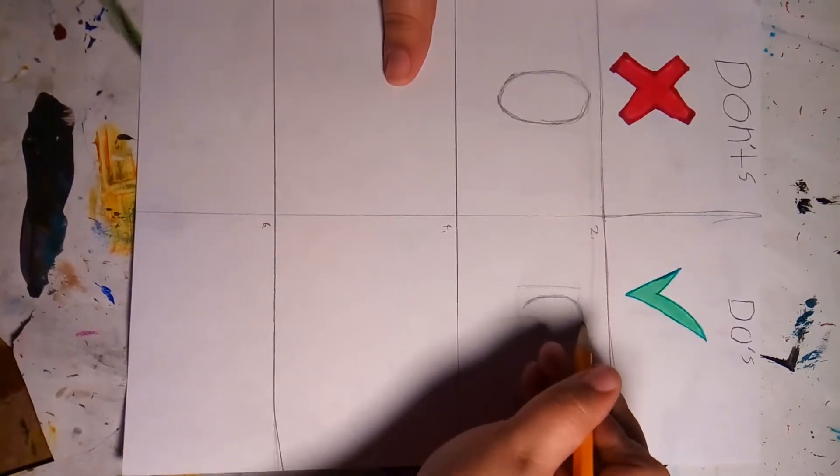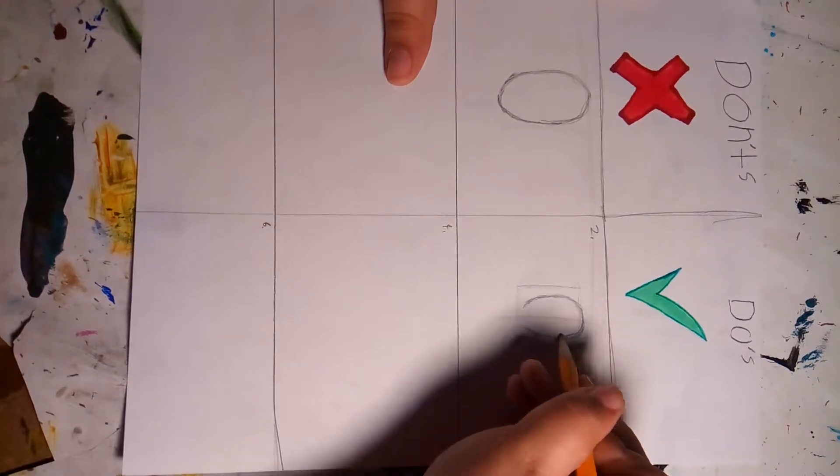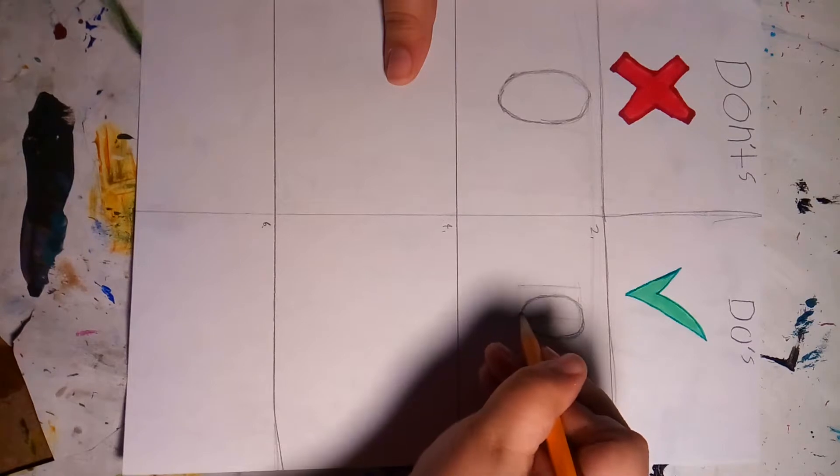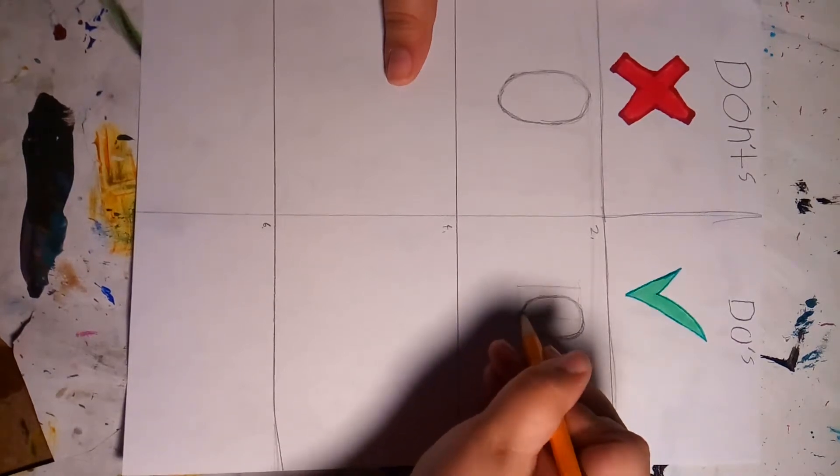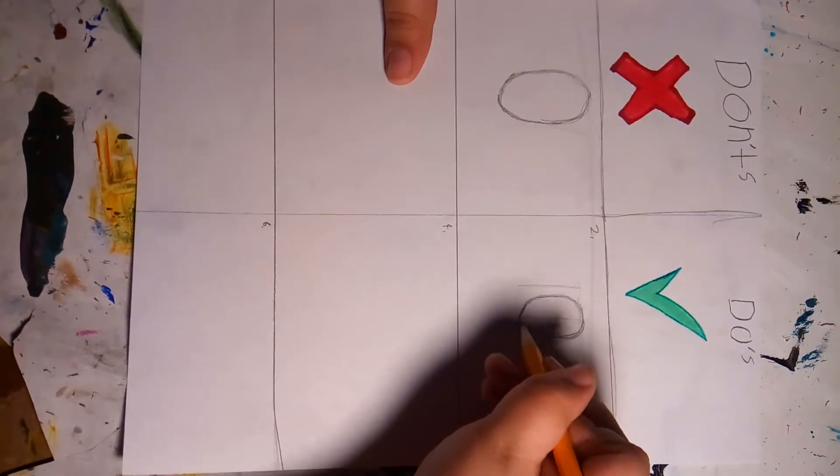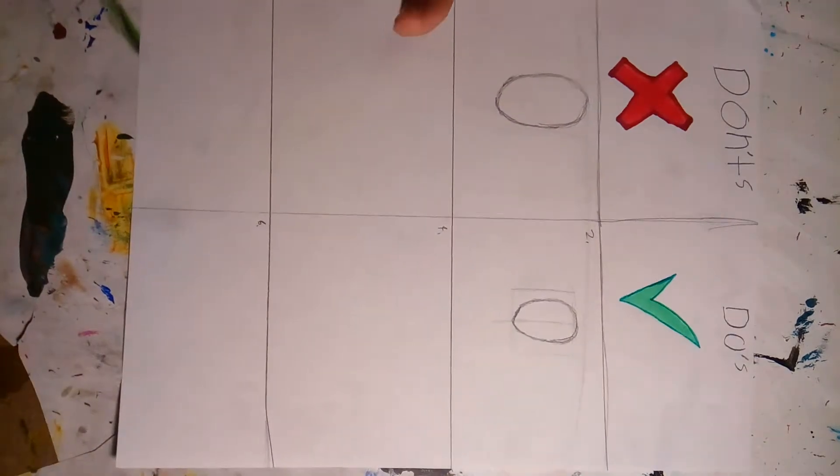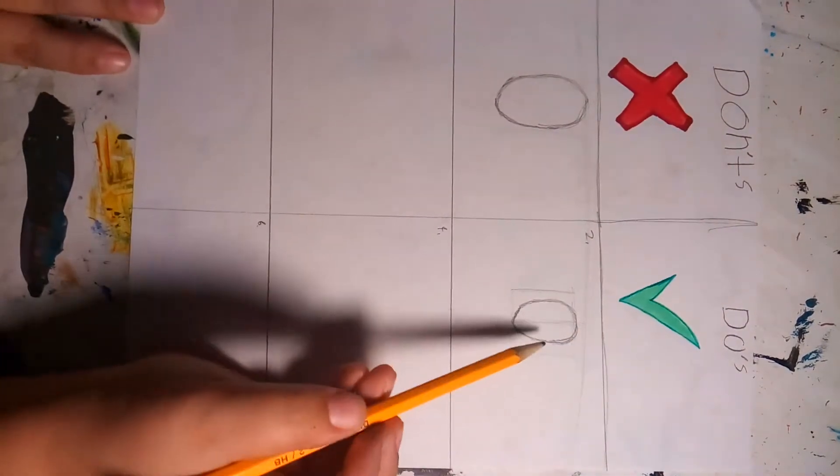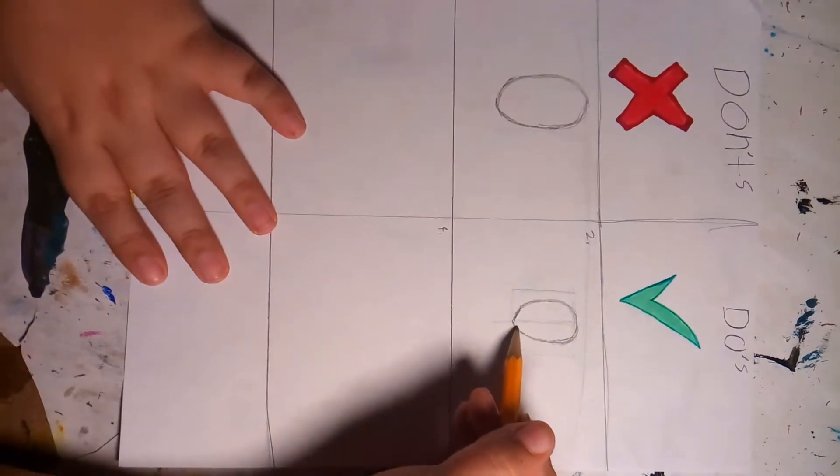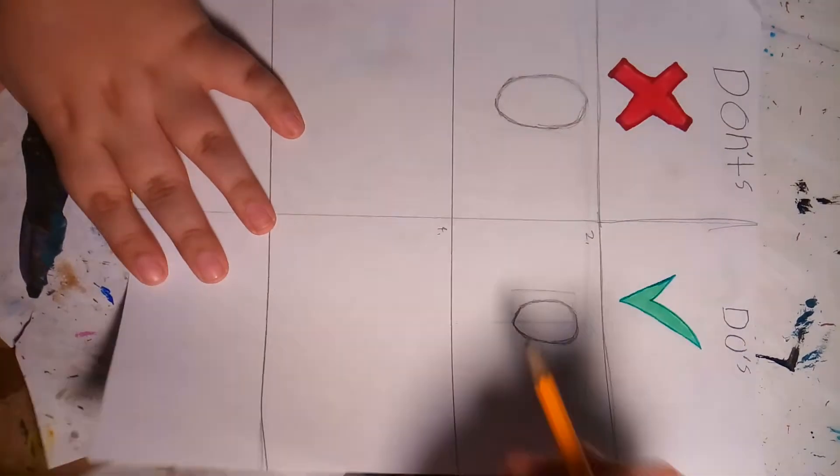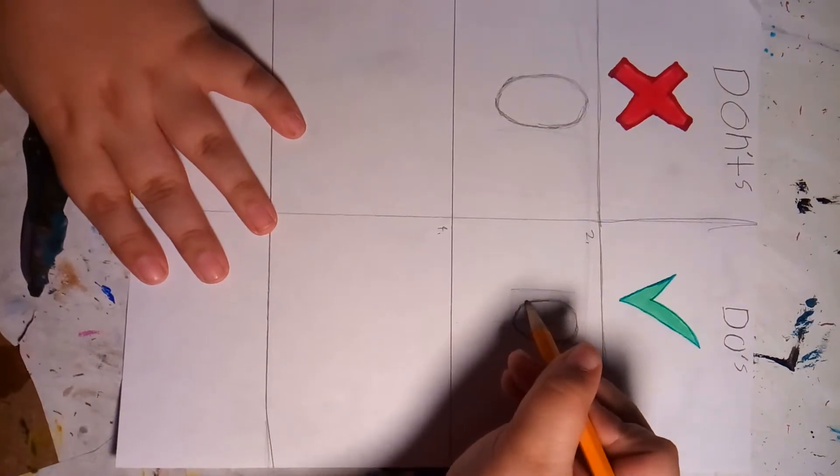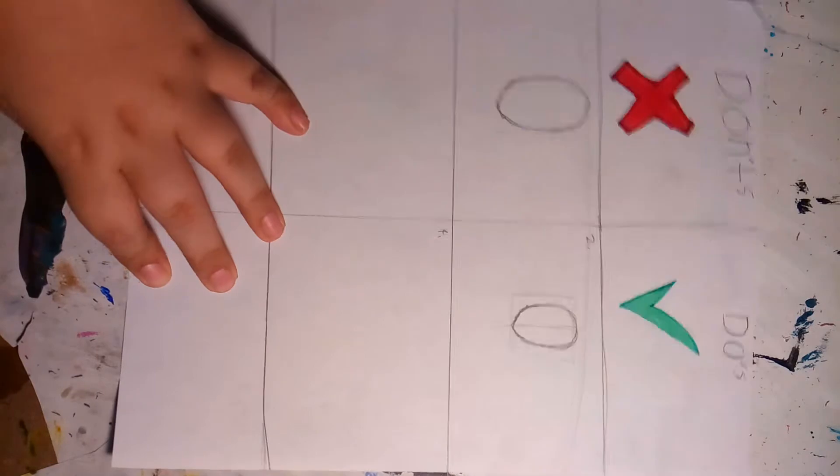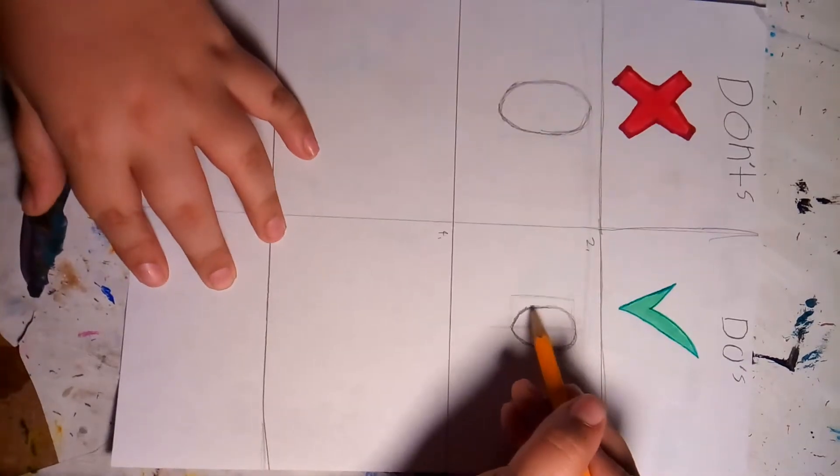Once you have this basic head shape at the top, just going to curve it in to where this box stops. And there's your head. Since you already have your lines ready, I'm just going to... And also don't be afraid to make your lines really thick.